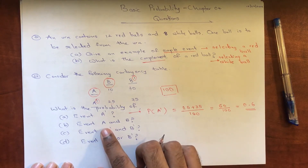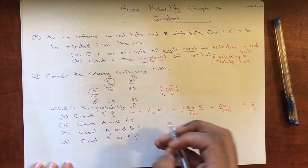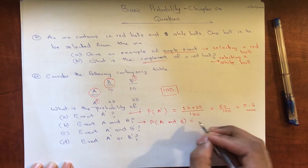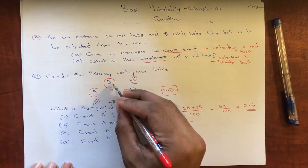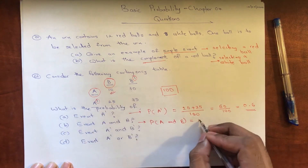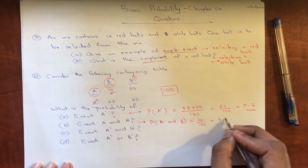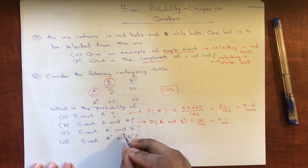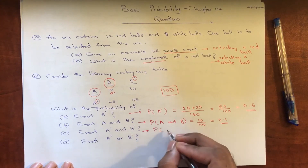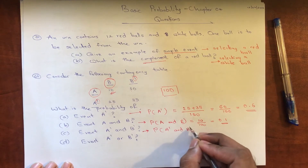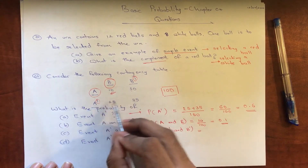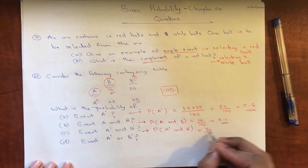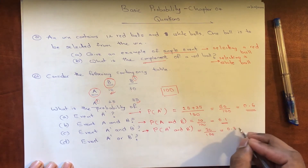Then they ask for the probability of event A and B. Looking at the table, A and B is 10, so 10 divided by 100 equals 0.1. Then they ask for the probability of complement of A and complement of B. Looking at the table, complement of A and complement of B is 35. So 35 divided by 100 gives a probability of 0.35.